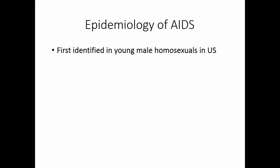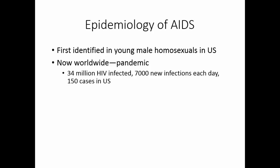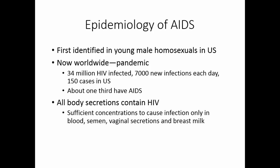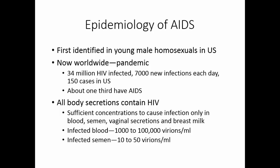AIDS was first identified in young male homosexuals in the United States in the early 1980s. It's now worldwide — it's a pandemic. 34 million people are infected with HIV. About 7,000 new infections occur each day, with 150 of those cases being in the United States. About one-third of the infected population have AIDS. All body secretions contain HIV, but sufficient concentrations of the virus are found only in blood, semen, vaginal secretions, and breast milk. Infected blood has 1,000 to 100,000 virions per milliliter, and infected semen has 10 to 50 virions per milliliter.